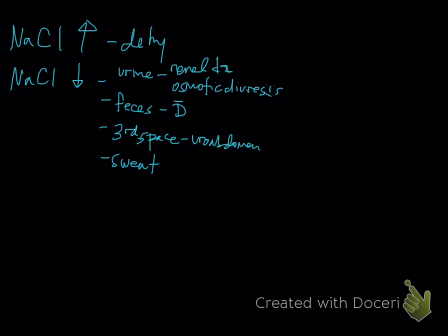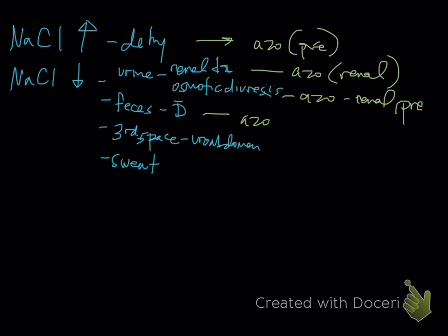In many of these, you're going to have concurrent azotemia potentially. If it's just dehydration, you can have pre-renal azotemia. With renal disease, you expect renal azotemia. Osmotic diuresis may also cause renal azotemia, potentially pre-renal. The renal is because you can't concentrate. If an animal has severe enough diarrhea and becomes dehydrated, you can see azotemia.